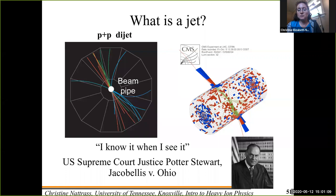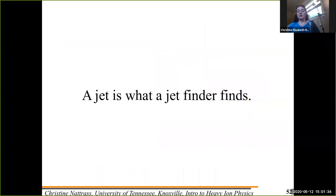If you want to find these algorithms, look for a software package called FastJet. If any of you do something with actual reconstruction of jets, you're going to use FastJet because it is the best computational implementation of these algorithms. The functional definition of a jet is that a jet is what a jet finder finds. A jet is not a parton — it is the output of this algorithm.